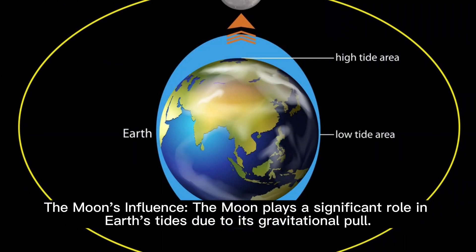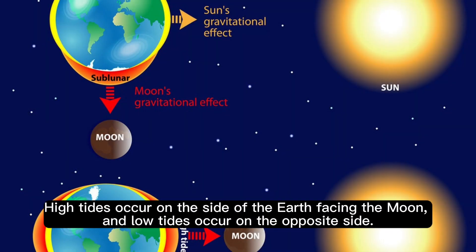The moon's influence. The moon plays a significant role in Earth's tides due to its gravitational pull. High tides occur on the side of the Earth facing the moon, and low tides occur on the opposite side.